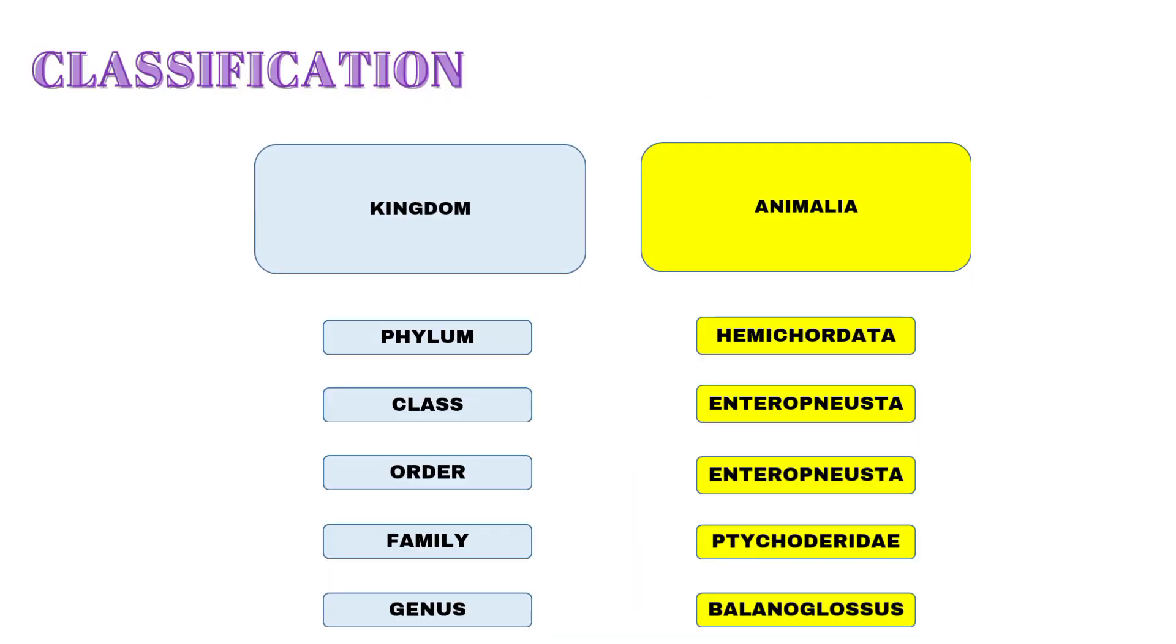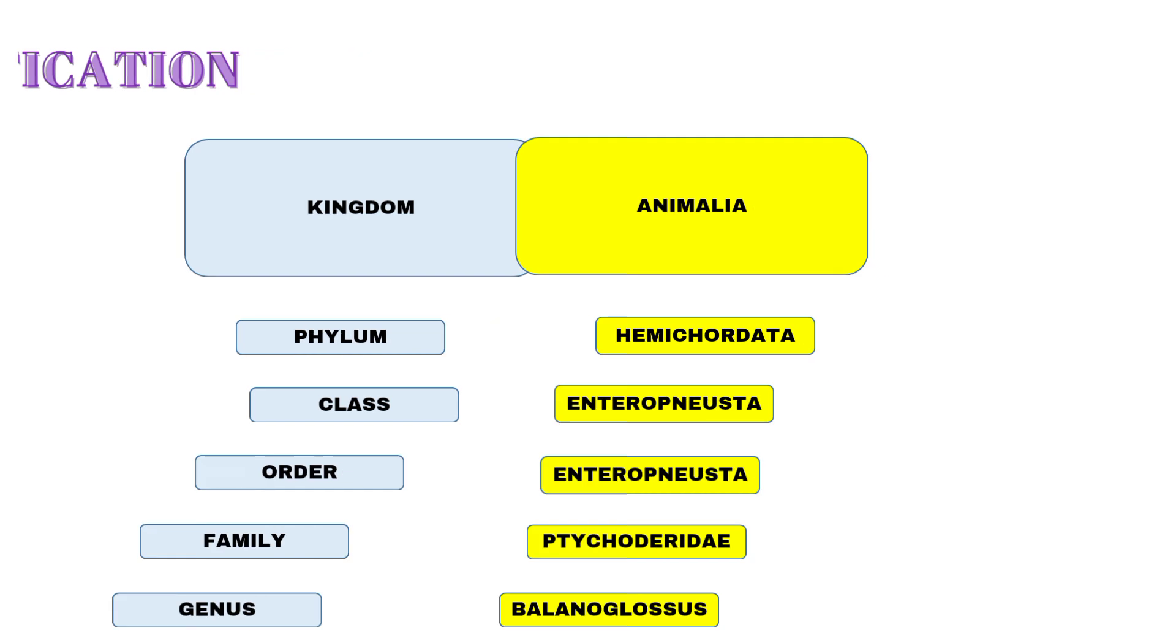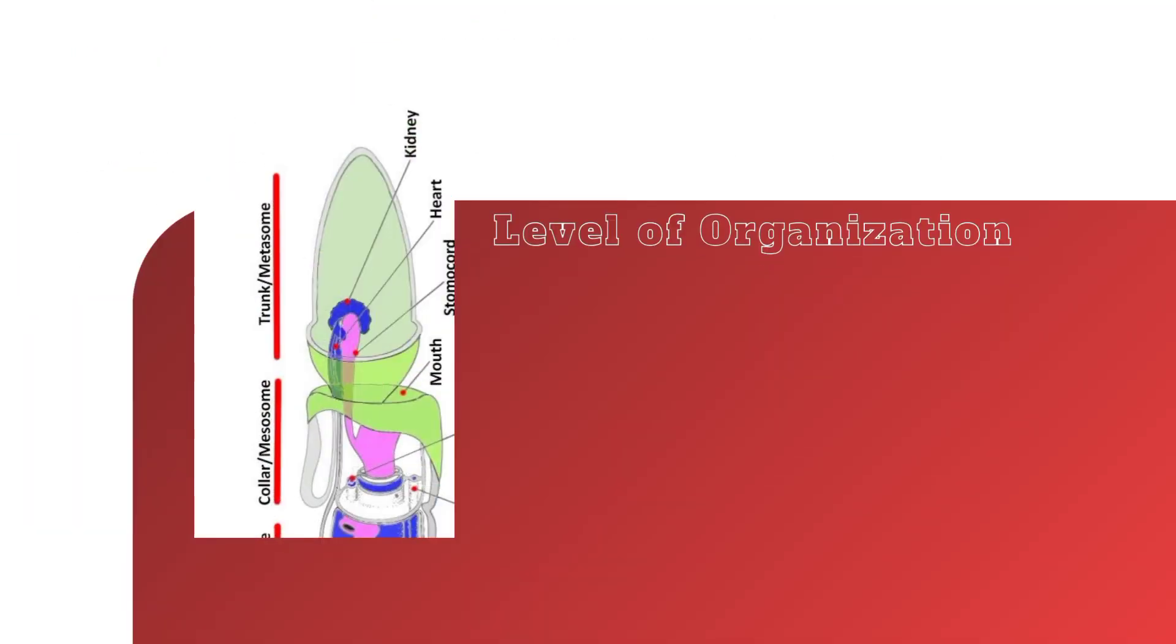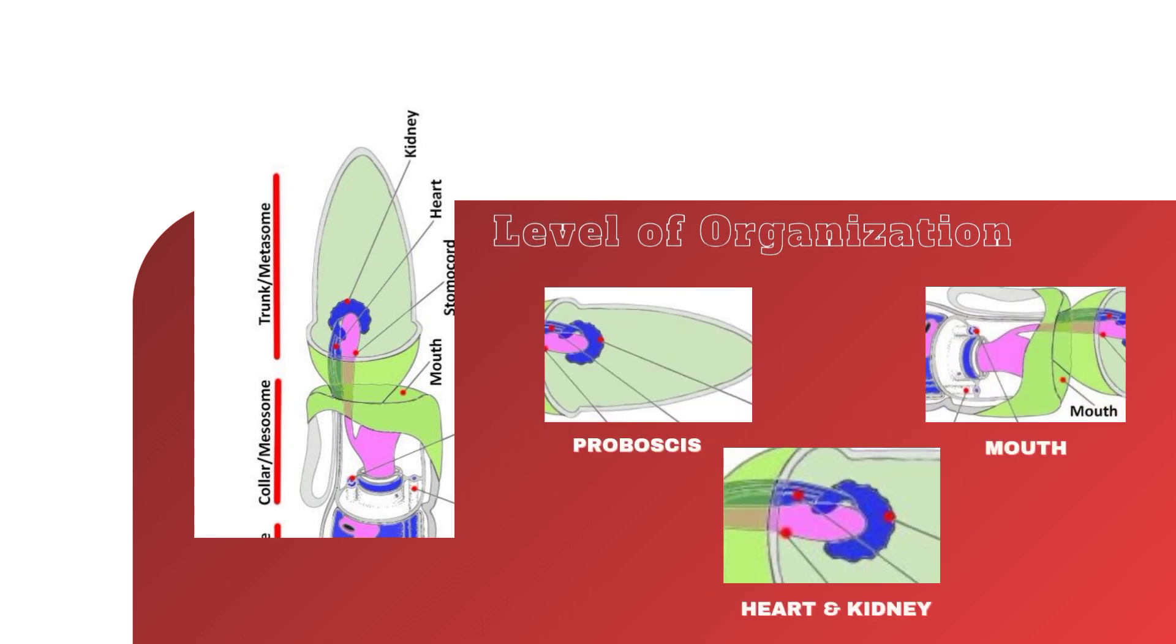Let's discuss why this species belongs to Kingdom Animalia. Justification: It has organ system level of organization. For example, it has various organs such as proboscis, mouth, heart, and kidney.